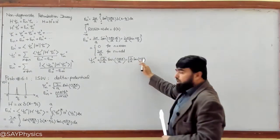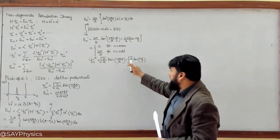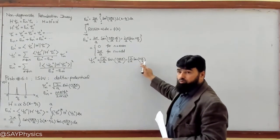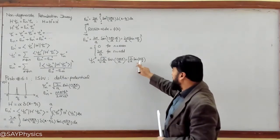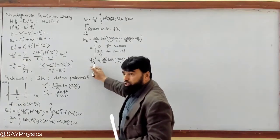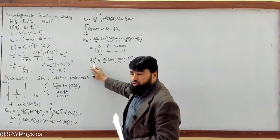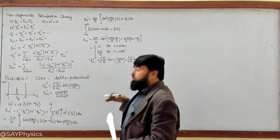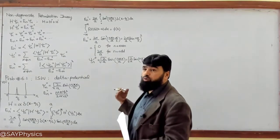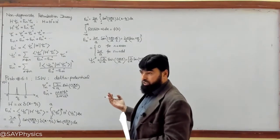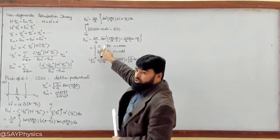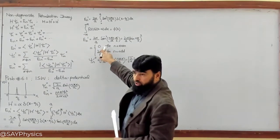When n is odd, we get a nonzero wave function. When n is even, the wave function becomes zero because sin(nπ/2) = 0, making the whole wave function zero. It means when n is even, there is no wave function at that point. Since the wave function does not exist there, its energy correction is not available.